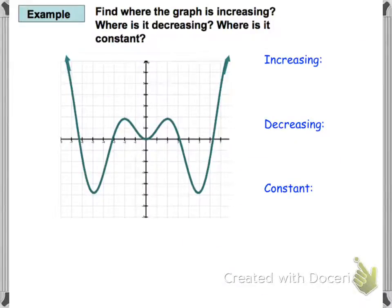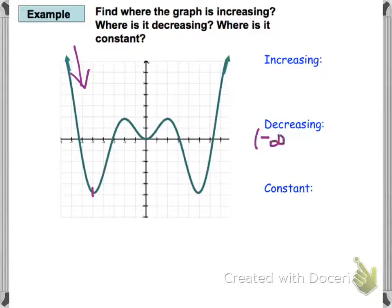Looking at the first example: where is the graph increasing, decreasing, and constant? Starting on the left and working through the graph, it's going downhill from negative infinity all the way to an x value of negative 5. So the graph is decreasing from negative infinity to x equals negative 5. Notice we're using the x values.